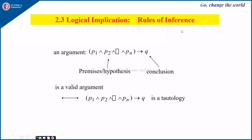Next is the rules of inference. An argument P1 and P2 and … Pn implies Q — where all these premises (hypotheses) are true — is a valid argument if it is equivalent to a tautology. That means when P1, P2, … Pn are all true, we can arrive at conclusion Q, and the whole implication is a tautology.